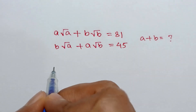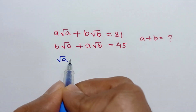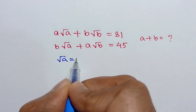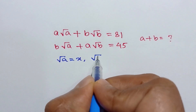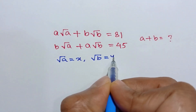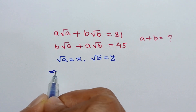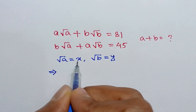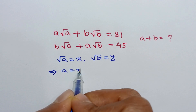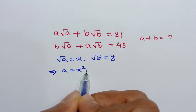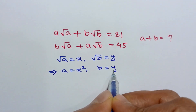Let's consider square root of a is equal to x and square root of b is equal to y. Taking squares of both sides, a is equal to x squared and b is equal to y squared.